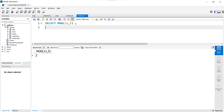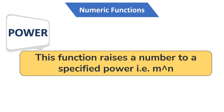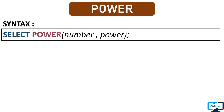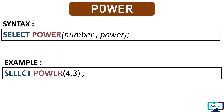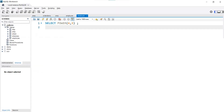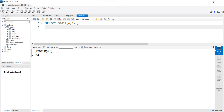It is very easy to use the MOD numeric function and it is also a very important one. Our next numeric function is POWER. This function raises a number to a specific power and returns the result of the exponential operation. As parameters we pass the base number and the exponent to which we want to raise it. For example, raising 4 to the power of 3 — after executing the query, our output is 64, which is the correct result.